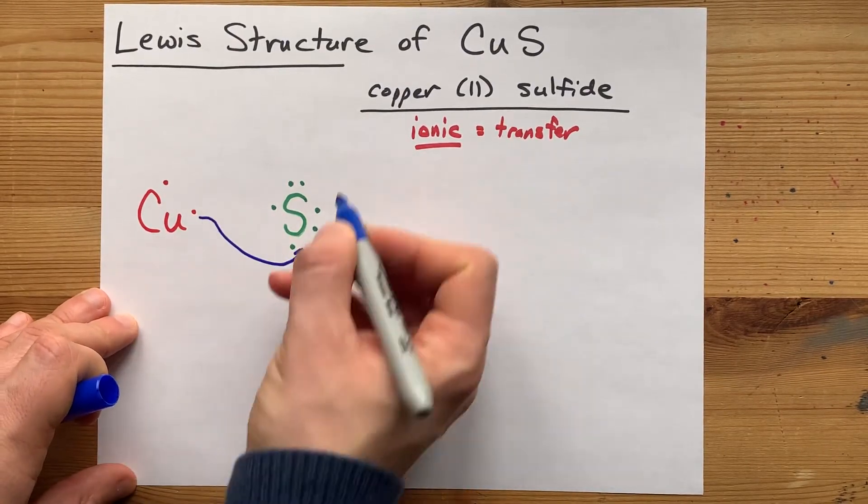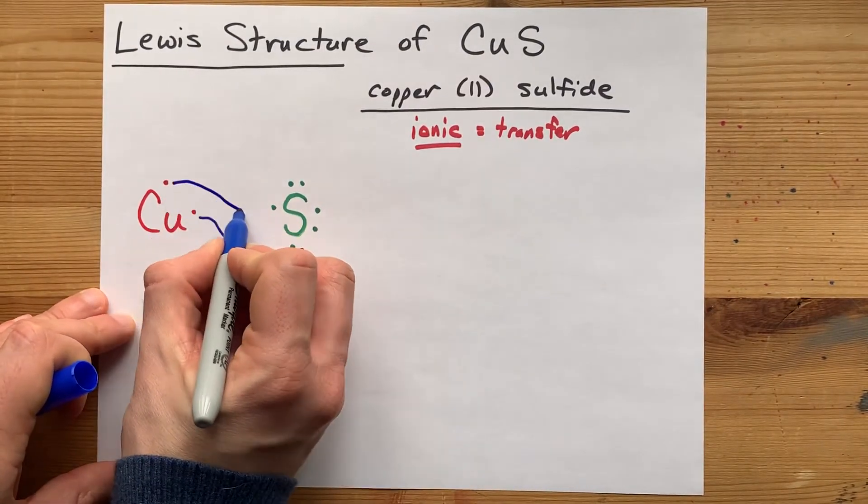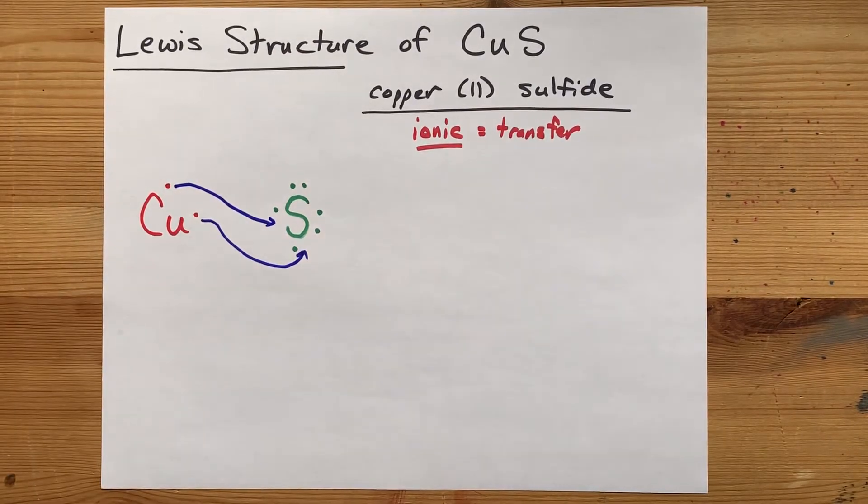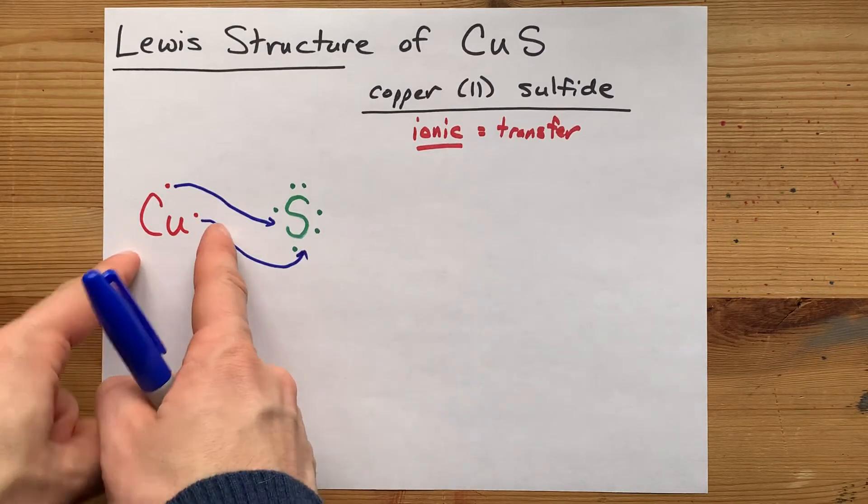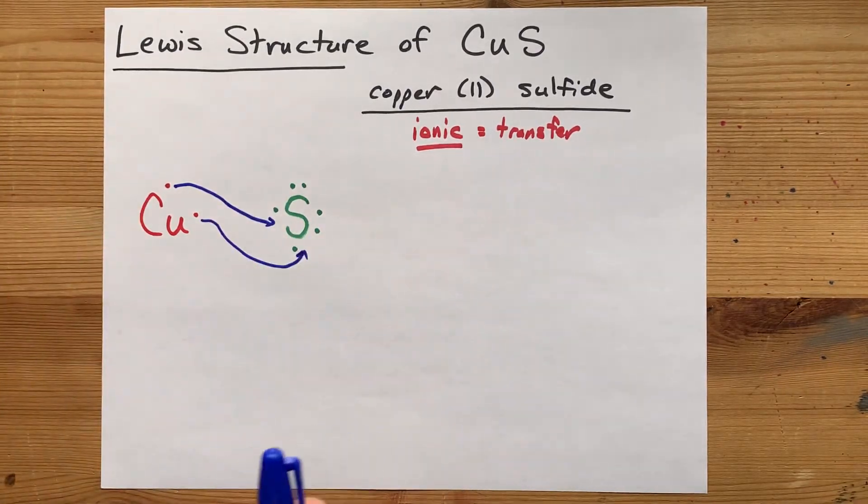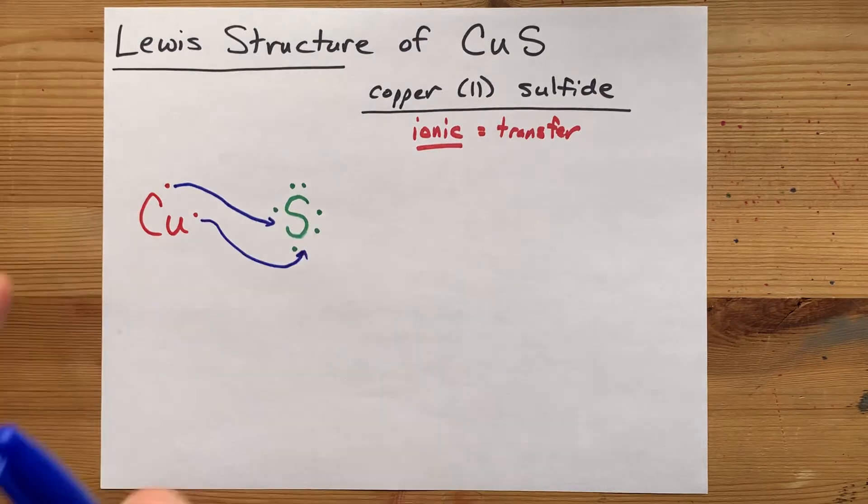So, it gives one electron there, a second electron here, and now sulfur has a full eight. Copper is completely empty in what was its valence shell. Everyone's happy.